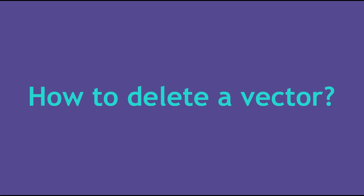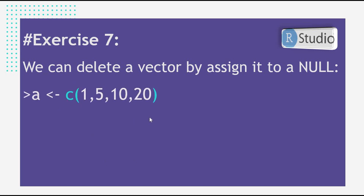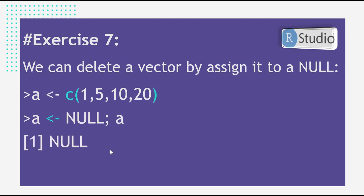To delete a vector, assign NULL to it. For example, if vector a is assigned, write a <- NULL, then print a — you will get NULL.